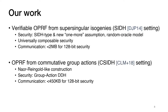Our second construction is an oblivious PRF from commutative group actions, which can be instantiated from isogenies using the CSIDH group action. This construction follows a Naor-Reingold-style construction from groups. Its security follows from the group action DDH assumption, and its communication cost is under 450 kilobytes for a 128-bit level of security.